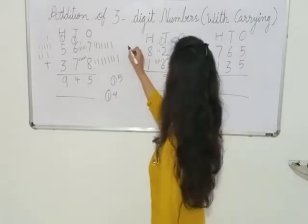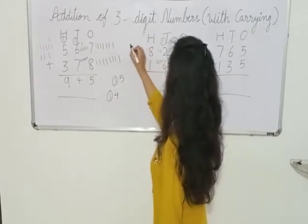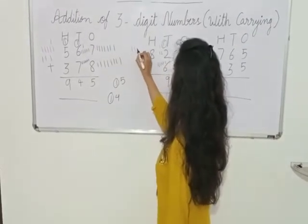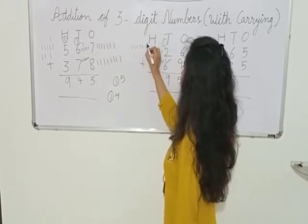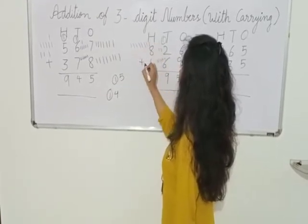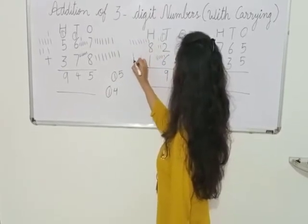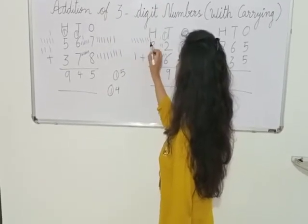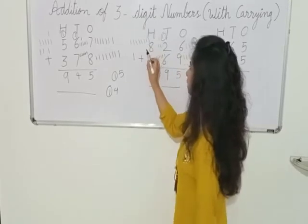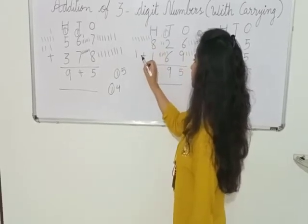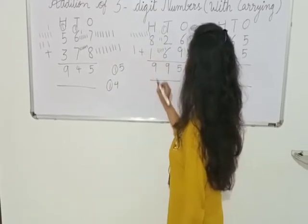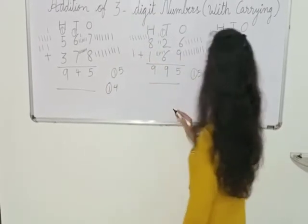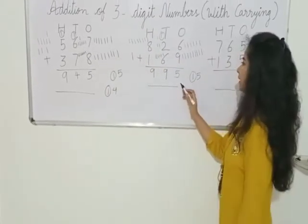Here we have 8, we draw 8 lines: 1, 2, 3, 4, 5, 6, 7, 8. Here we have 1, we draw 1 line. 8 is already there — after 8, what comes? 9. So we will write down 9. So what is our answer? 995.